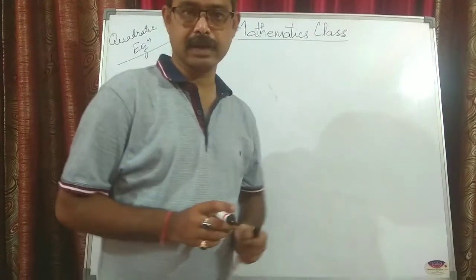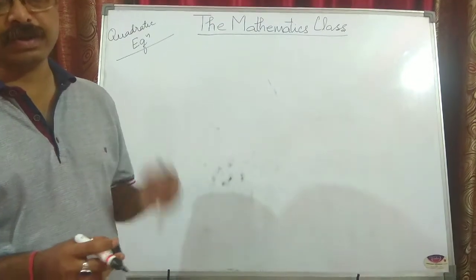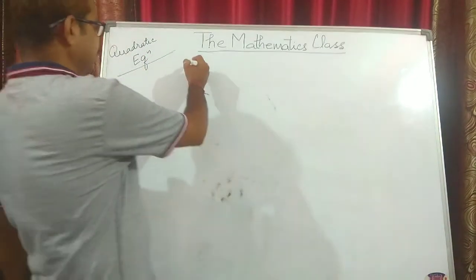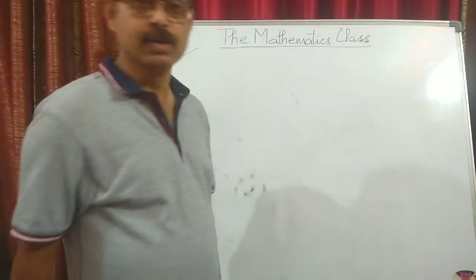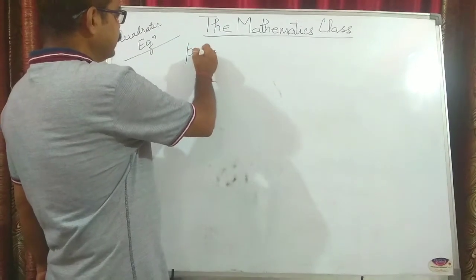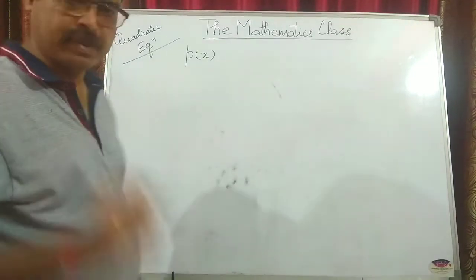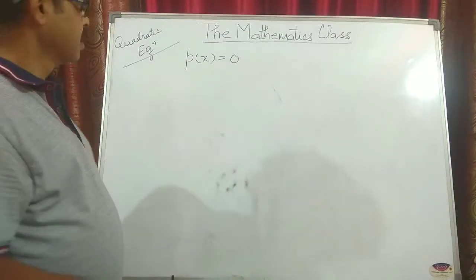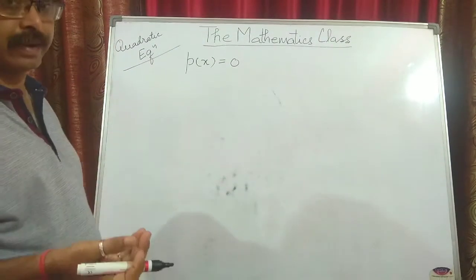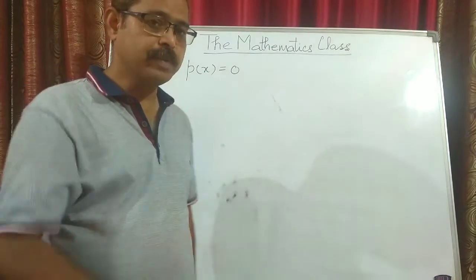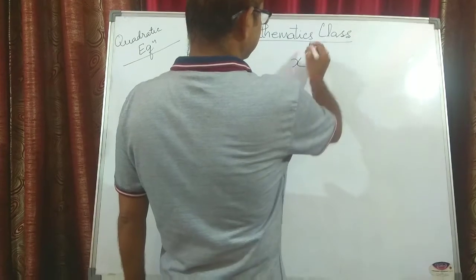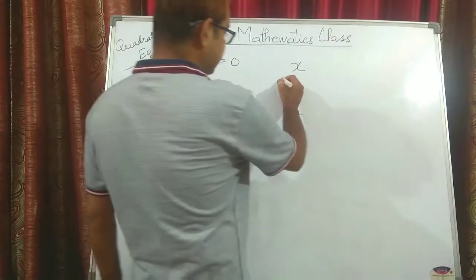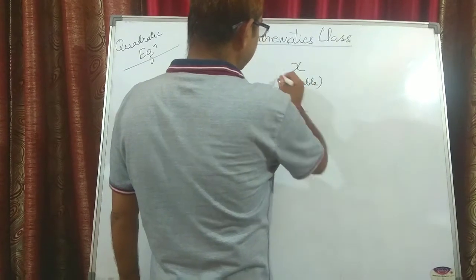Hello and welcome to the mathematics class. This class is for class 9 ICSC, and today we will be discussing quadratic equations. First of all, what is a quadratic equation? If I take a polynomial P in X that is equal to 0, this is known as a quadratic equation. A quadratic polynomial is one in which the highest power or exponent of the variable X is 2.